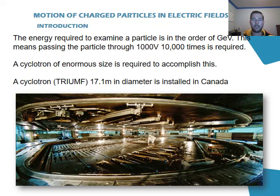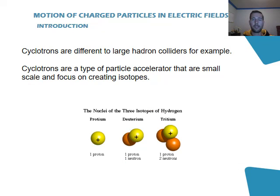The largest cyclotron in the world is in Canada called TRIUMF and it's 17.1 meters in diameter. One purpose of cyclotrons is to create isotopes for medical purposes. Now this is different to large hadron colliders and other particle accelerators. Their main focus is research. So the largest large hadron collider is approximately 27 kilometers long.